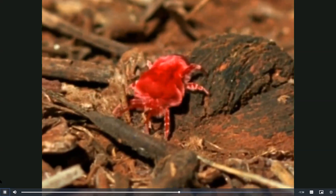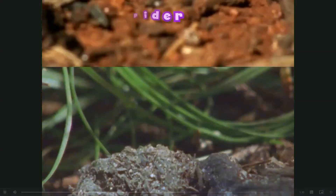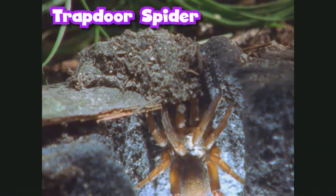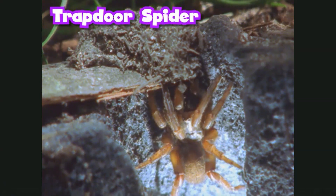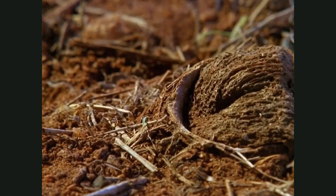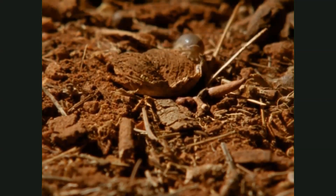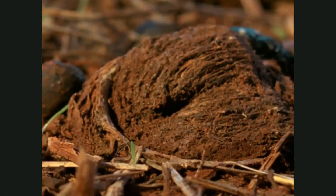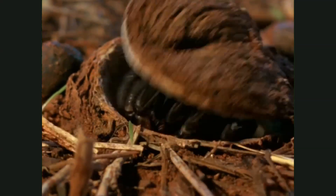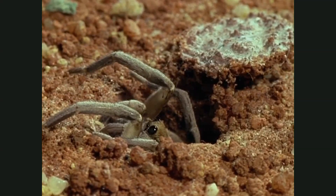Do you see a door on the ground? This insect doesn't either — but a trapdoor spider is hiding underneath, just waiting to pop out. Slam! That door is shut. There's no way out. But a trapdoor spider's traps don't always work perfectly. Sometimes an insect gets away. Oops! And hey, don't forget to shut that door, spider.